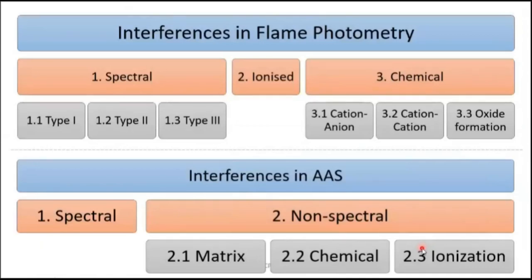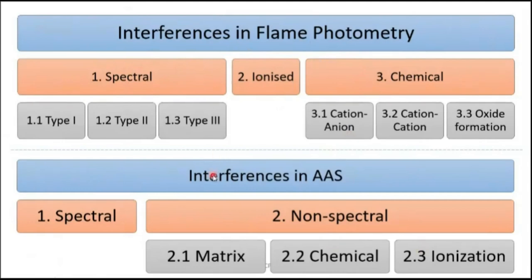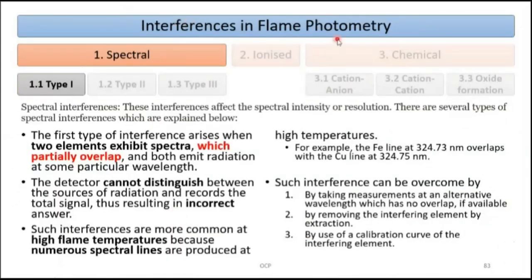Now moving to interferences in flame photometry and atomic absorption spectroscopy — similar to how Beer-Lambert's law had shortcomings in UV spectroscopy. In flame photometry there are three types of interferences: spectral, ionization, and chemical. In atomic absorption spectroscopy there are two types: spectral and non-spectral.